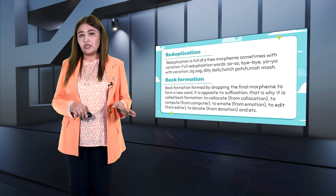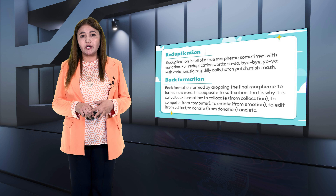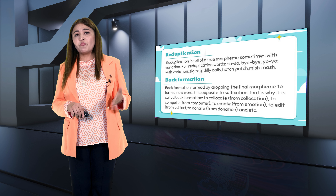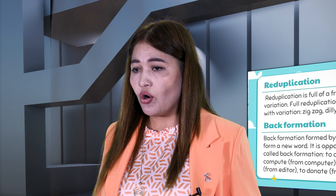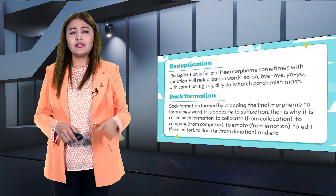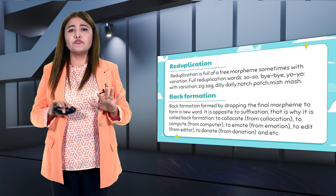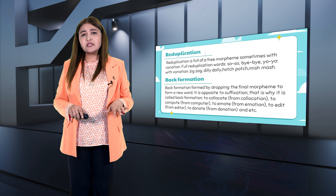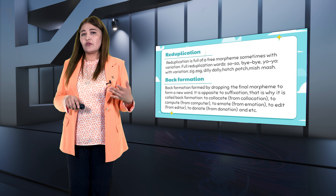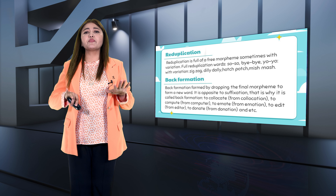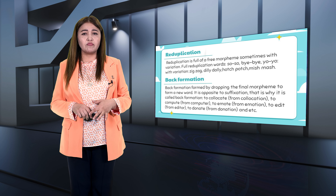Reduplication is the full or partial repetition of a word, sometimes with variation. In full reduplication: so-so, bye-bye, yo-yo. In partial reduplication: zigzag, dilly-dally, hodgepodge, mishmash. Back formation is formed by dropping the final morpheme to form a new word — it is opposite to suffixation, which is why it is called back formation. Examples: to collocate (from collocation), to compete (from computer), to emote (from emotion), to edit (from editor), to donate (from donation).